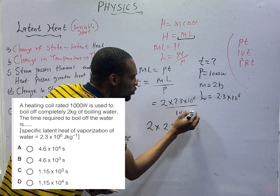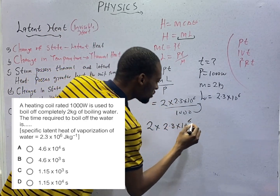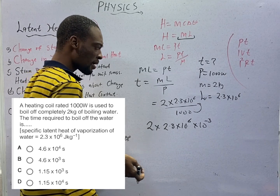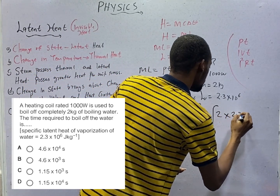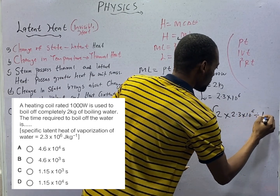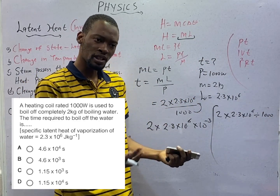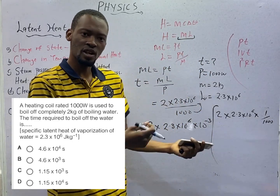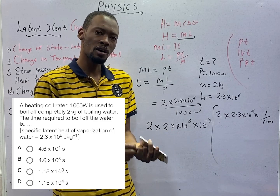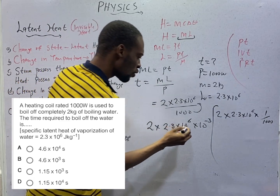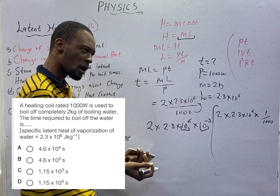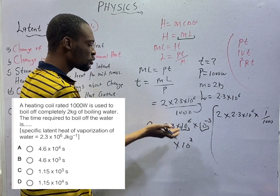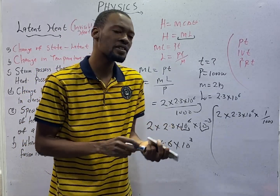This is the same as 2 times 2.3 times 10 to the power of 6 divided by 1000. Now, 1000 is 10 to the power of 3; as it goes up it becomes 10 to the power of minus 3. Remember this is the same thing as 2 times 2.3 times 10 to the power of 6 divided by 1000, and 1 over 1000 is 10 to the power of minus 3. The law of indices: when two bases are the same, you add the powers — 6 plus minus 3 gives you 3, so we arrive at times 10 to the power of 3. And 2 times 2.3 is 4.6, so the answer is 4.6 times 10 to the power of 3. You don't need to solve everything with a calculator — questions on standard form are usually very easy.